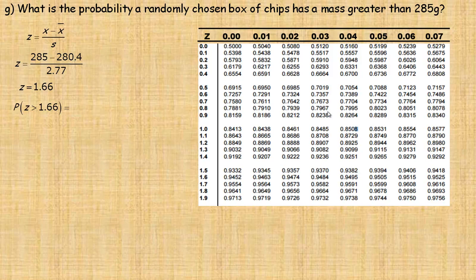And since the probability of all the outcomes of the sample space is 1, then what we do is we look up our 1.66, so 1.6 and then 6, this 0.9515 number. And so it's 1 minus that probability.